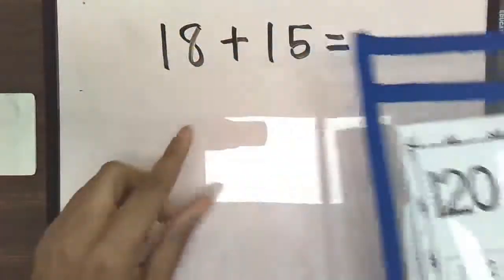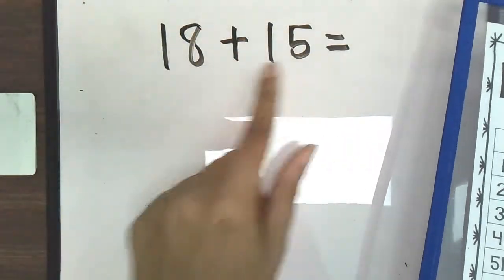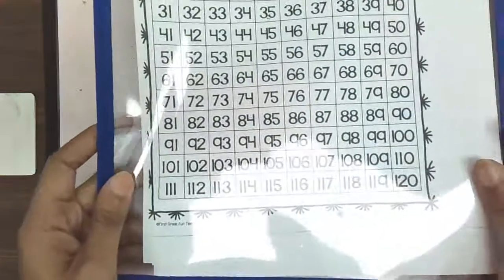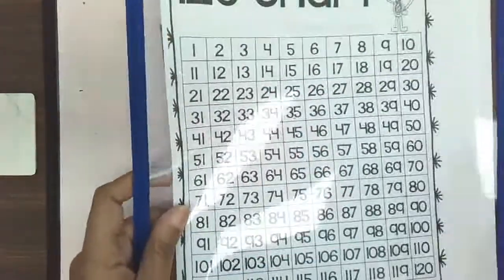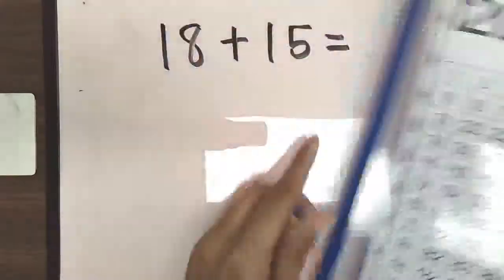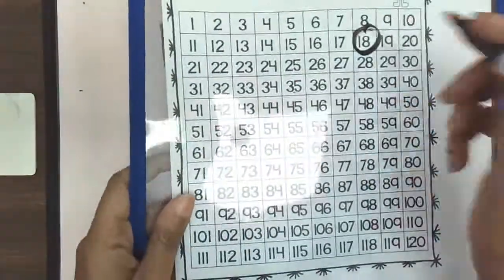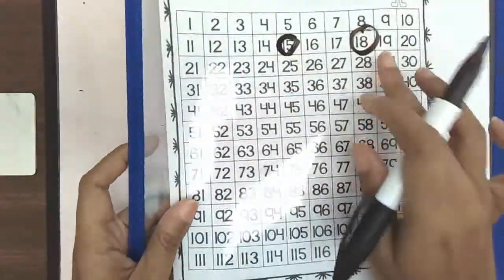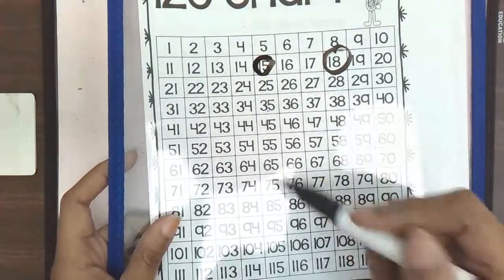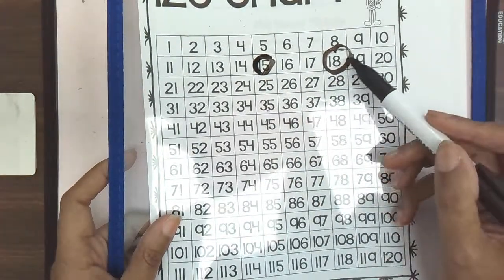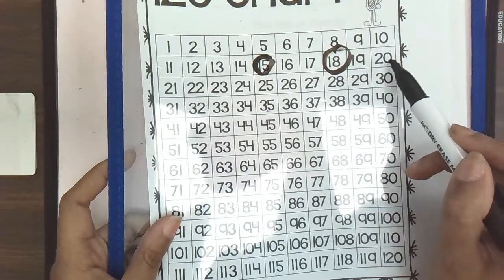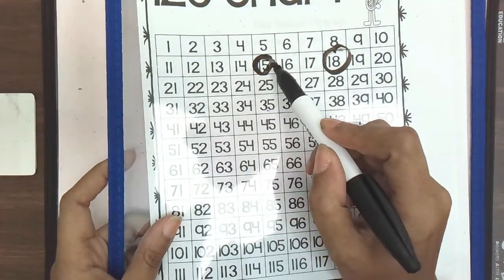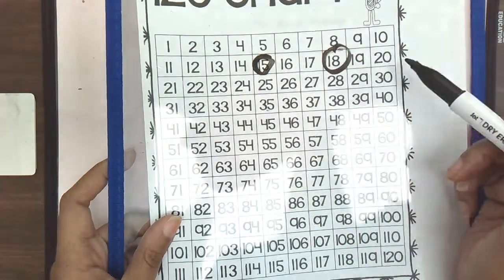So when we're looking at both of our numbers here, we want to see which one of these numbers is going to get us closest to a 10. So if we first find 18 on the 120s chart, here it is here, and then we're going to find 15 on the 120s chart. And we're going to look at these two numbers and compare them to see which one of these numbers is going to be closest to a 10. And the number that's closest to a 10 is 20 because we see we only have to make two hops to get to 20, whereas if we started with 15, we would have to make five hops.